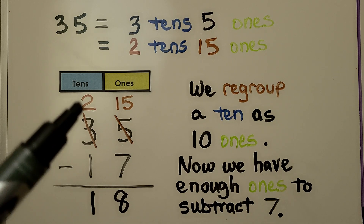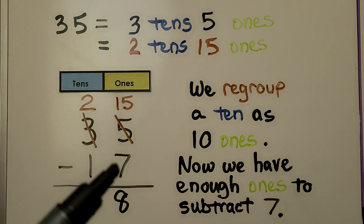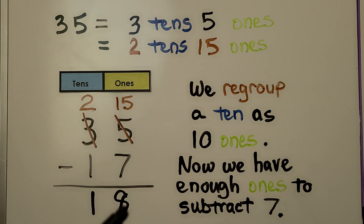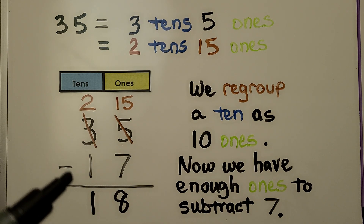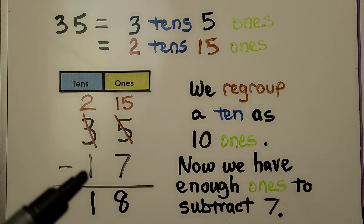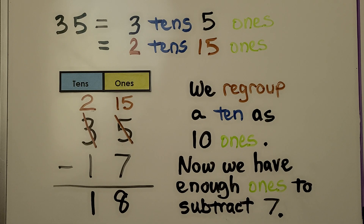Fifteen minus seven is eight. Two minus one is one. We have eighteen as our difference, as our answer.